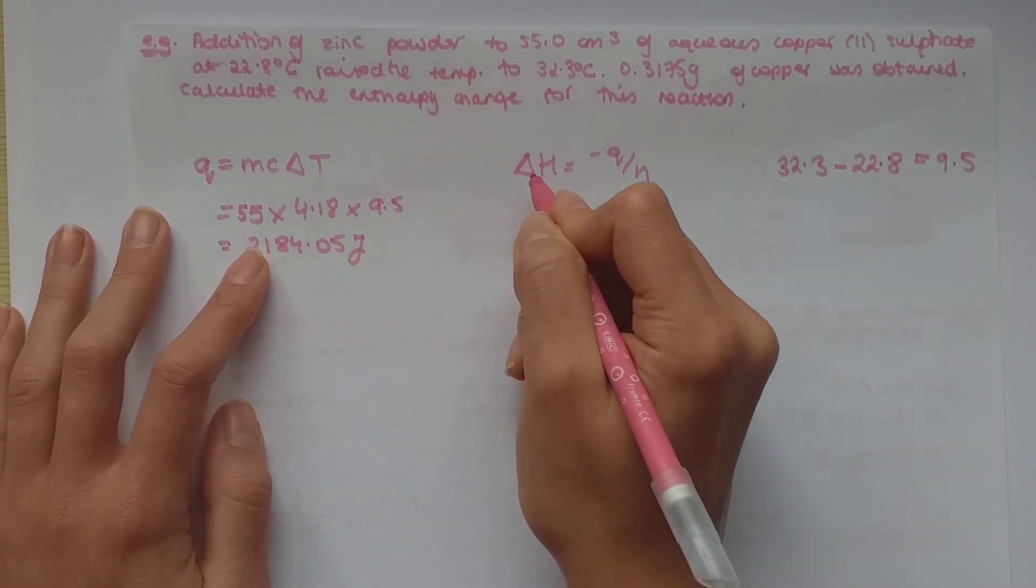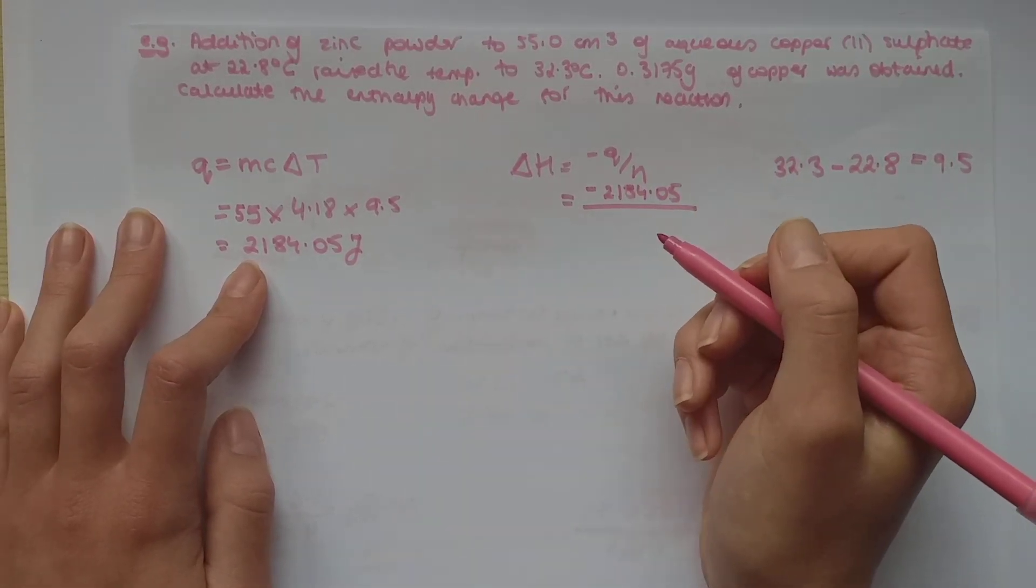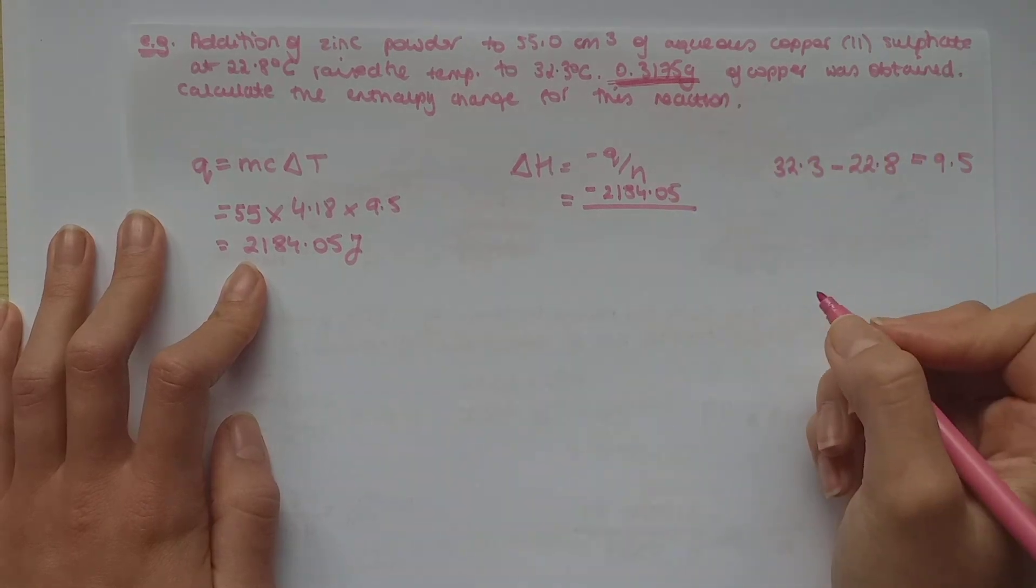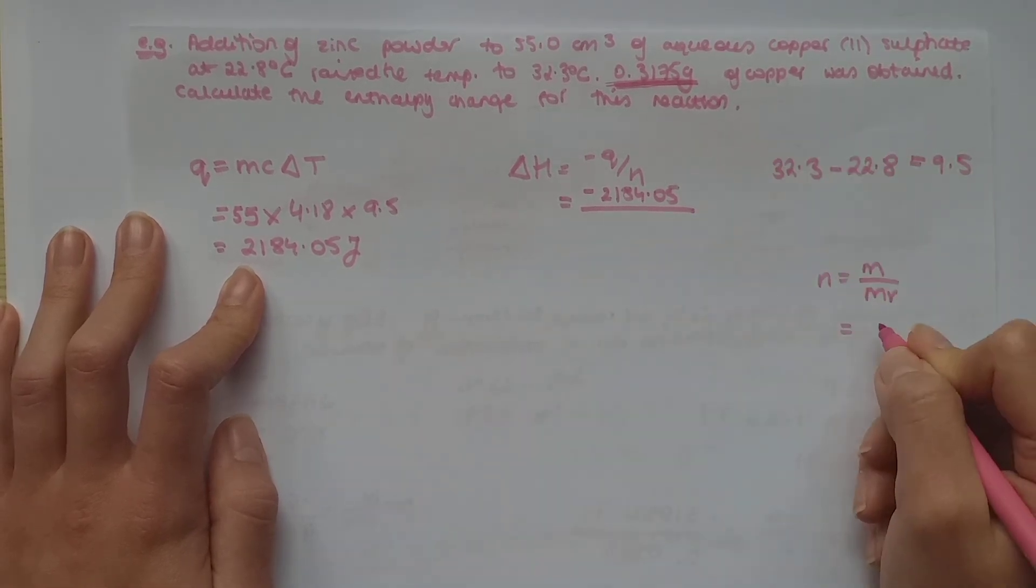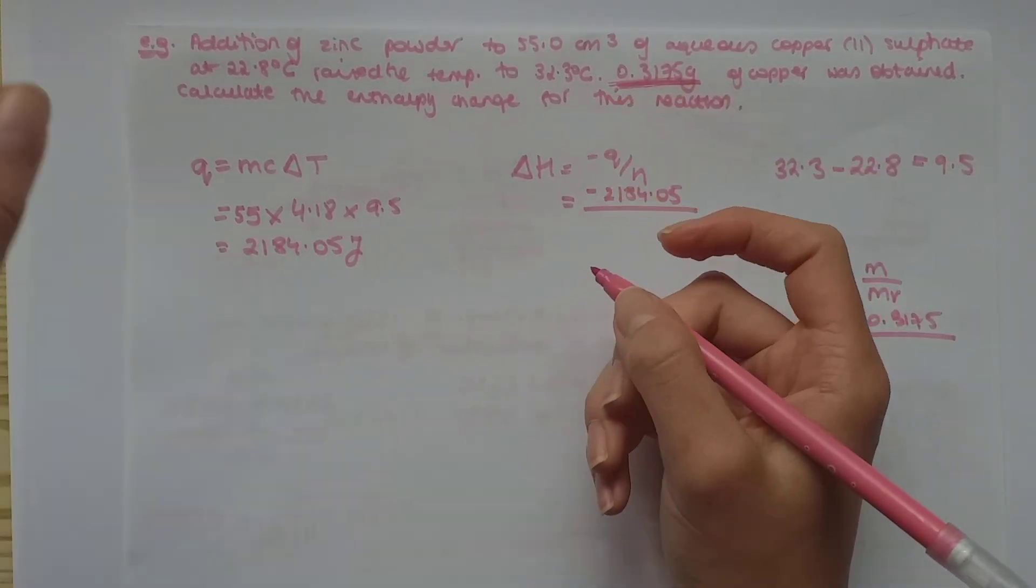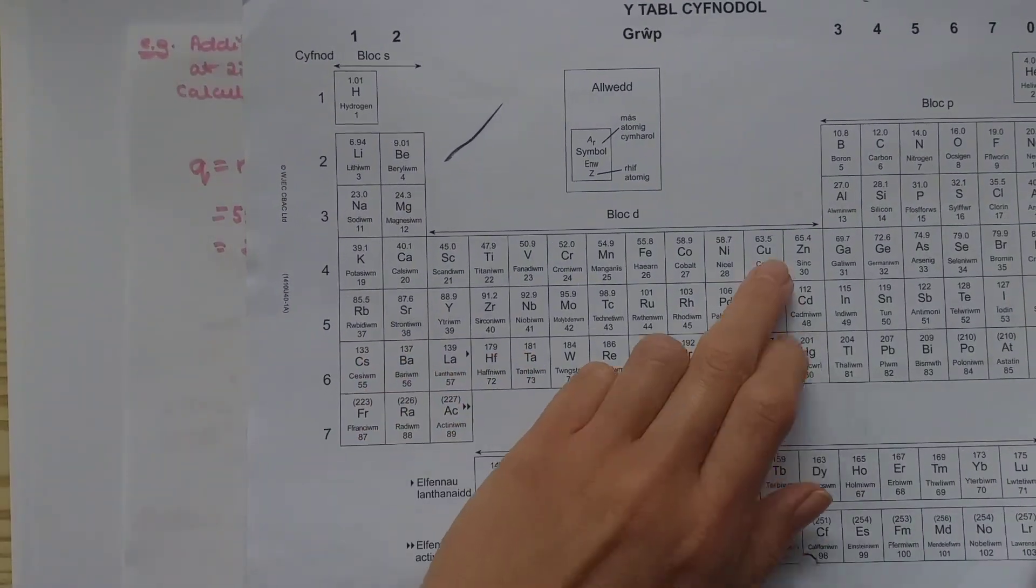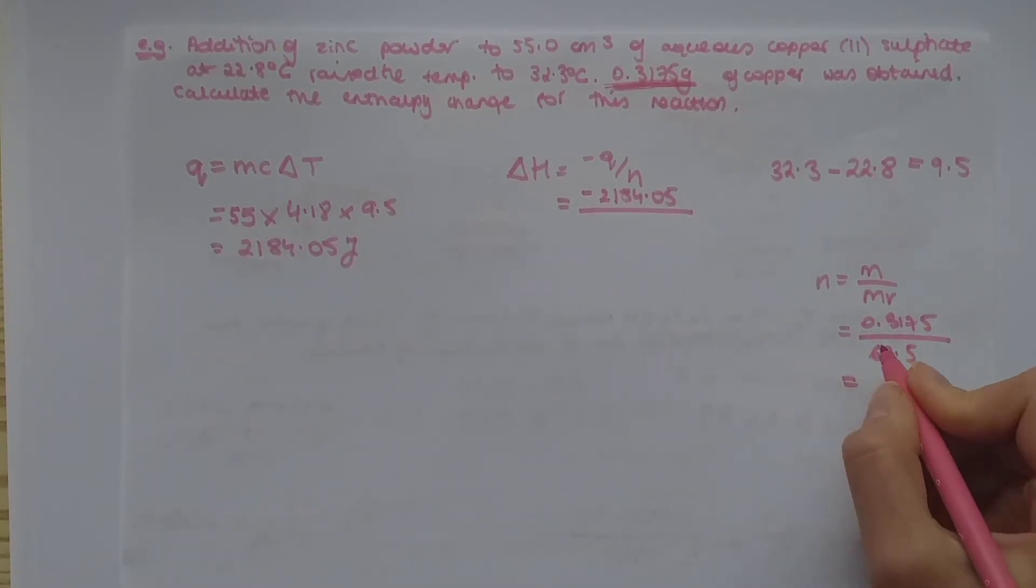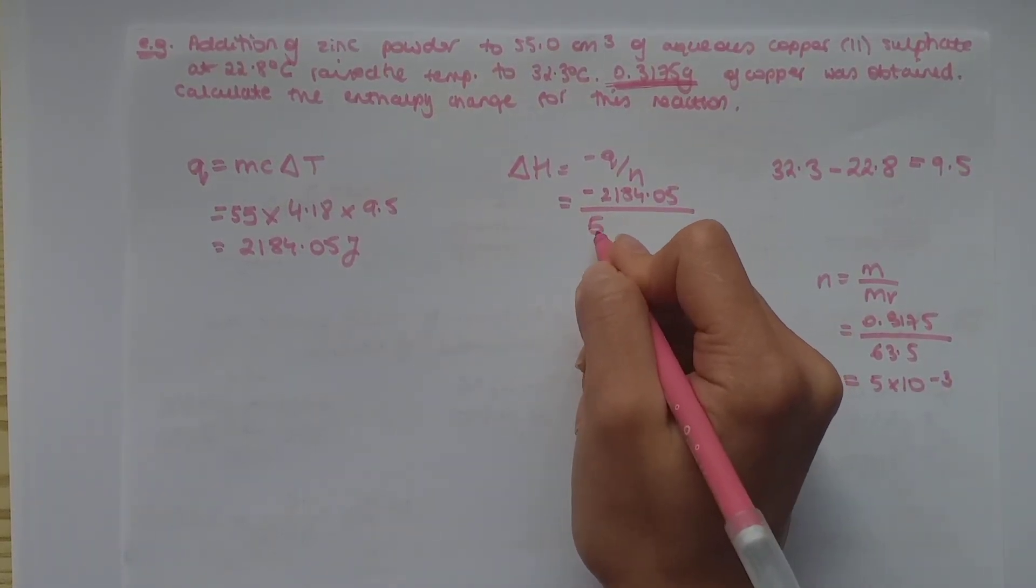If you got Q, we can now find the enthalpy change. It's minus the answer you got divided by the number of moles. And now we have to find the number of moles. So, the only mass we are given is this mass, so you straight away know you'd have to use it. Number of moles you calculate by doing mass over MR. Your mass is 0.3175. The MR of copper itself, you'll find on your periodic table. You have copper right here. So, the MR is 63.5. And the answer to this is 5 times 10 to the minus 3. Now, you can use it in your equation to find your enthalpy change.